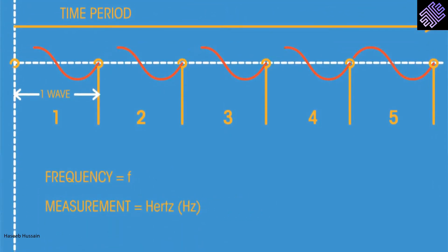Frequency is given the symbol F and is measured in units called Hertz. Hertz measure how many cycles per second. The formula for calculating frequency is 1 divided by time period, which is time for one complete cycle of wave.